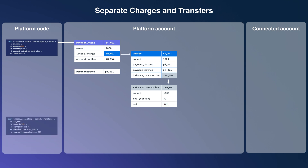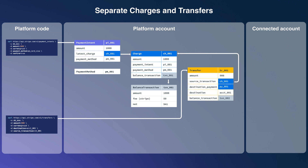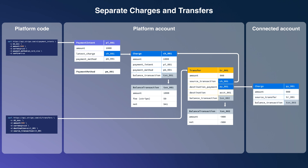Next, we make the second API call, which creates a transfer object on the platform account. Since funds just moved out of the platform account, we get another balance transaction object — here we see the platform lost $9. On the connected account, a charge object is created representing the money that arrived, and there's one last balance transaction object for $9.